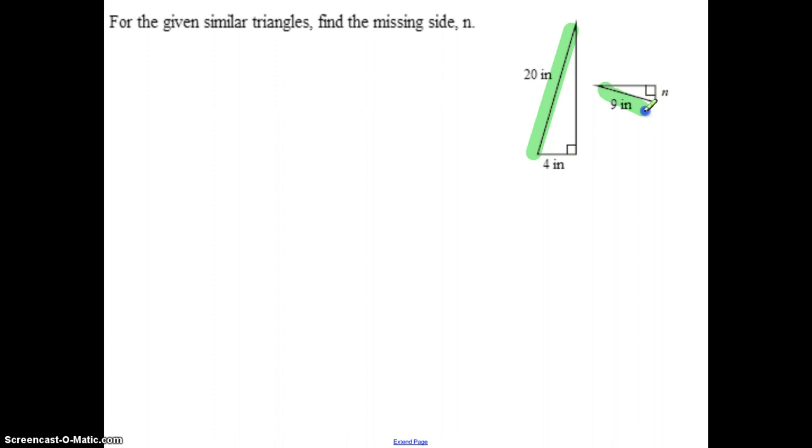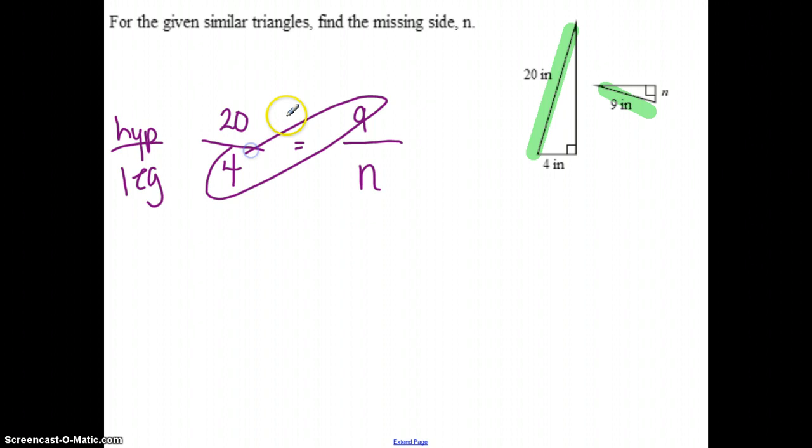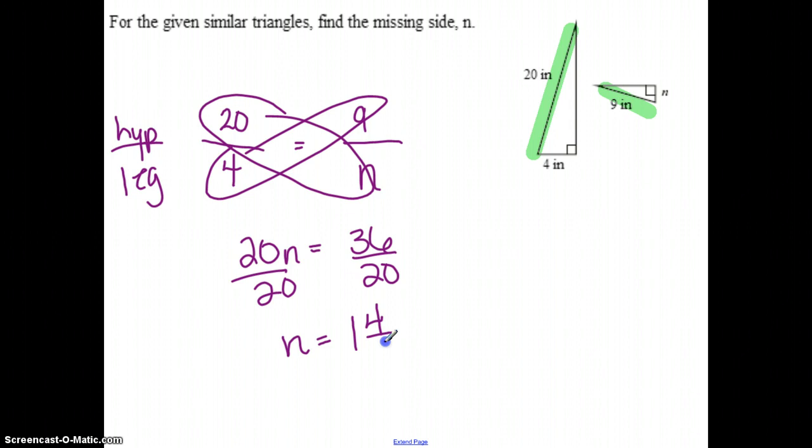I would probably do the hypotenuse in the top and the leg in the bottom. So this one, 20 is the hypotenuse in this one, and 9 is the hypotenuse in the other. 4 is the leg in this triangle and N is the one that's missing. Then go through and do your cross multiplying. So 20N equals 36, divide by 20, get N equals 1 and 4 fifths.